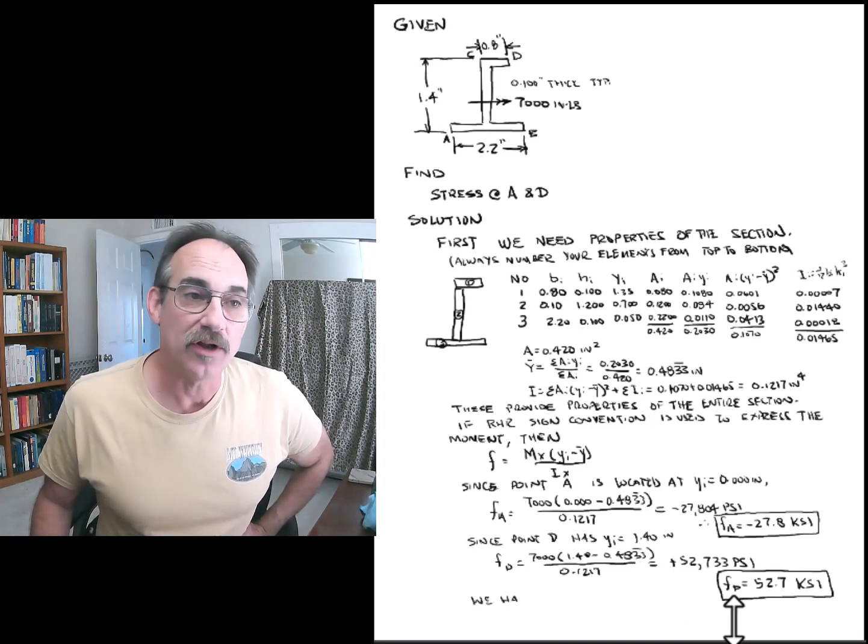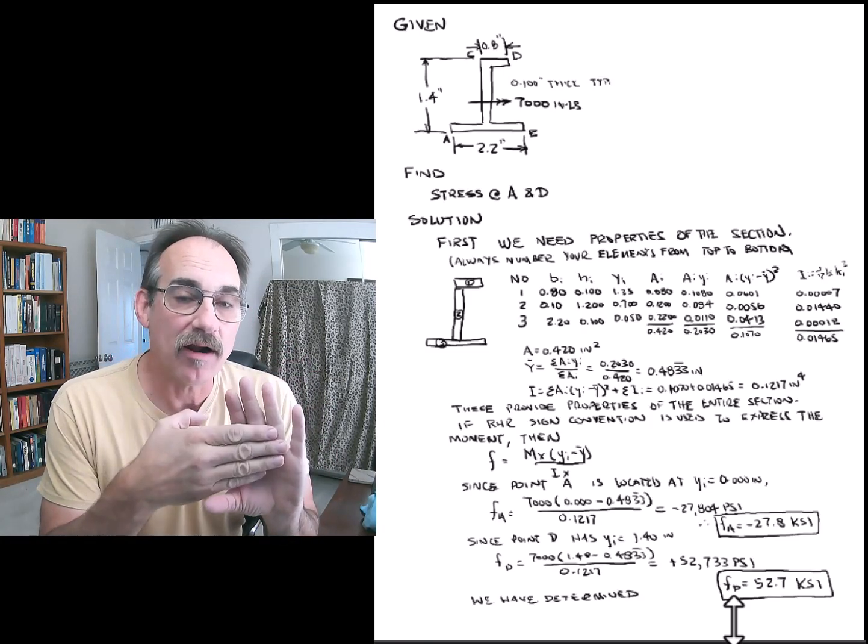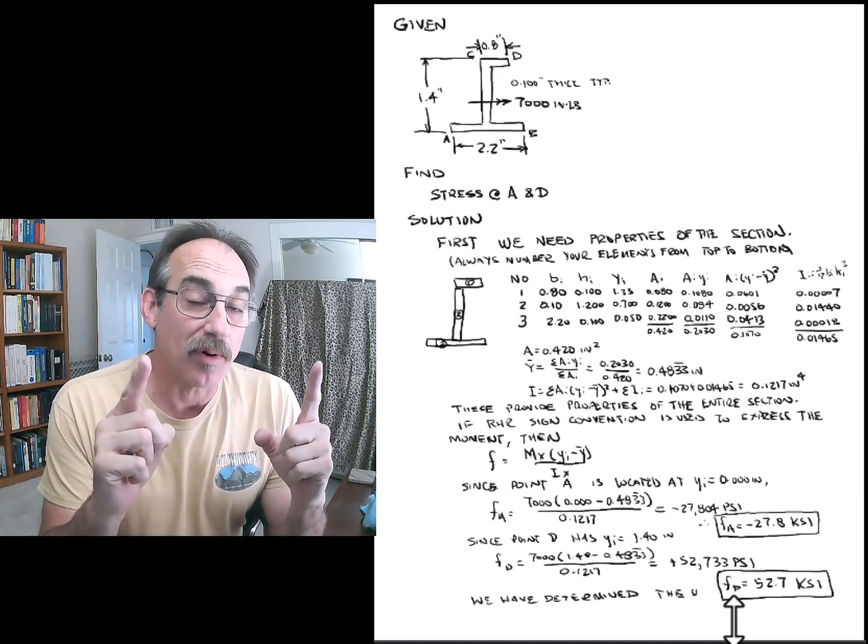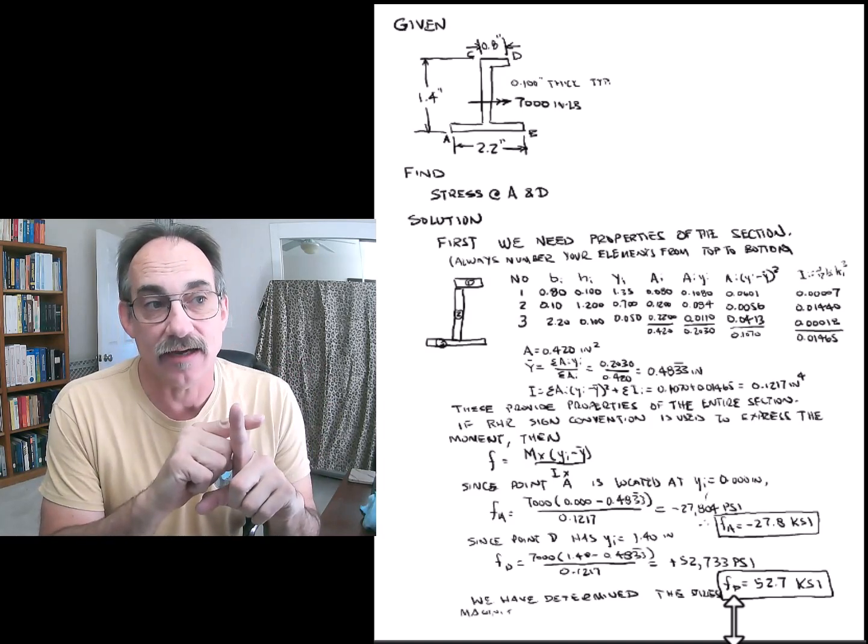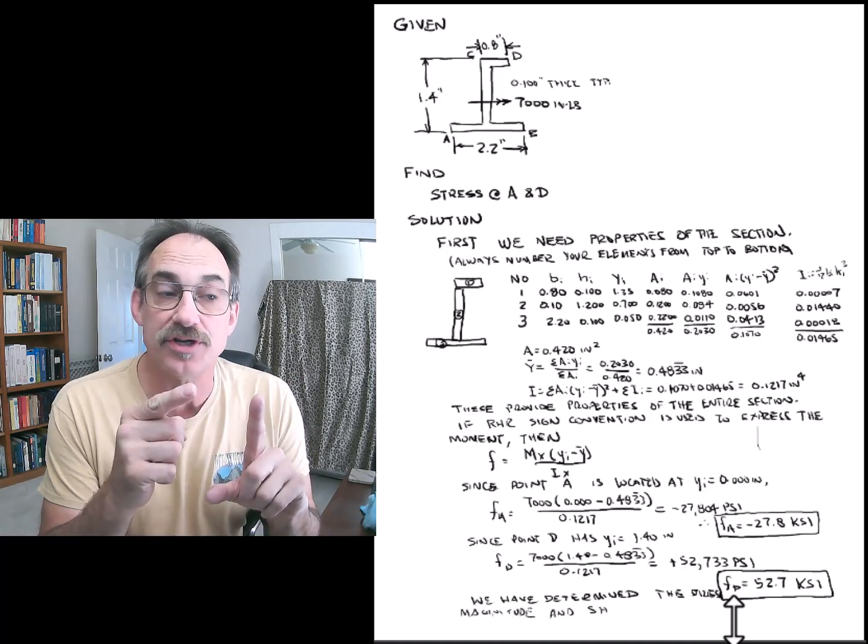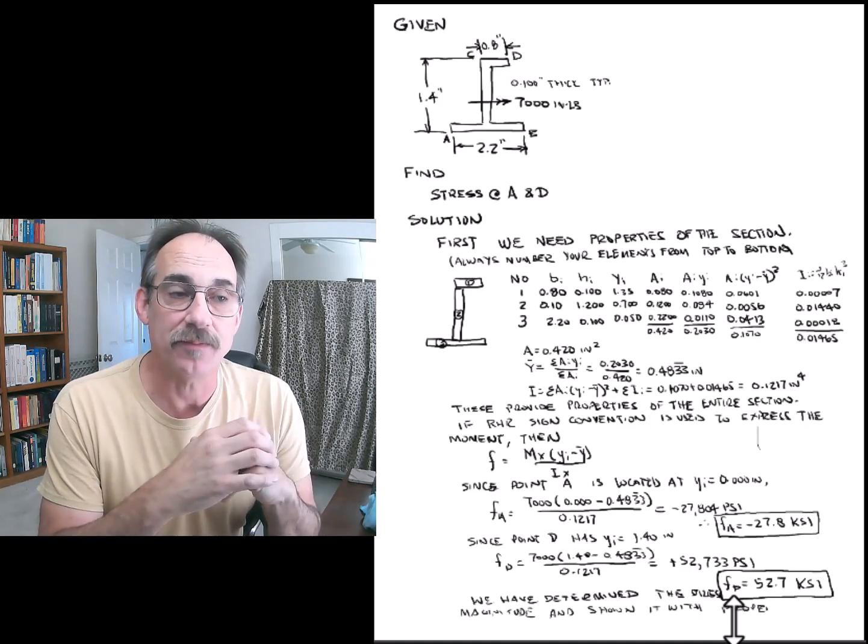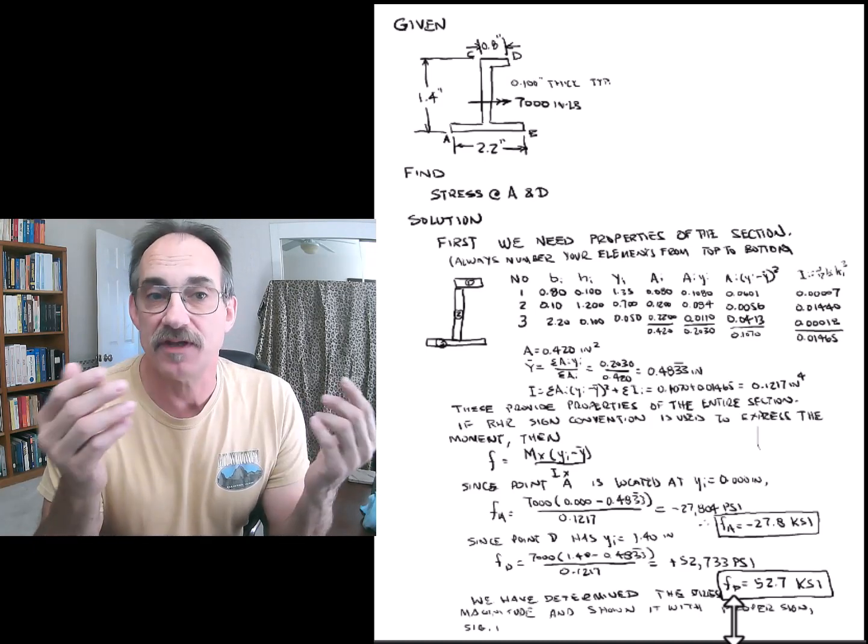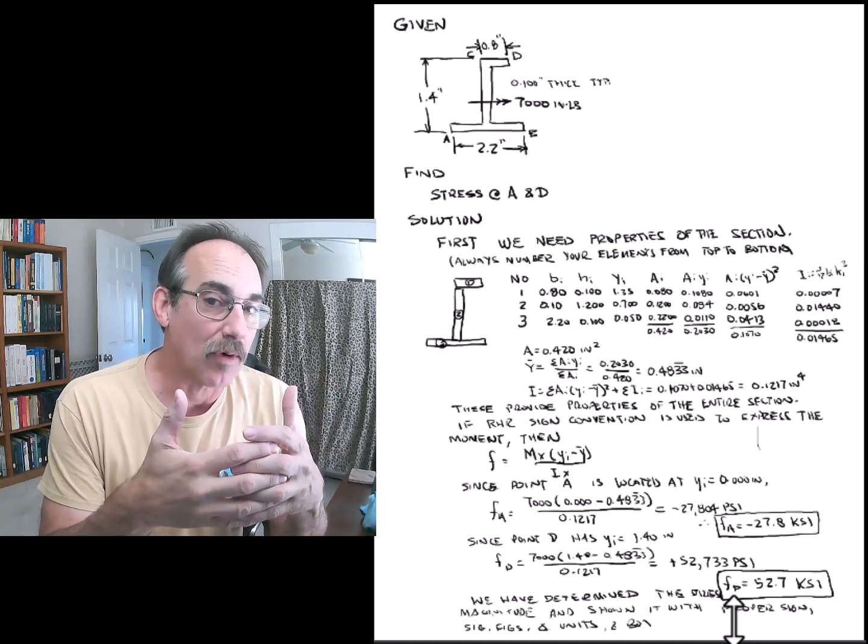When we're all done, we look at our answer. We have identified each answer with a numeric value, which is showing proper sig figs and units and sign. I'm showing this as sign is negative and positive. We could have also shown that instead as C or T for tension and compression. We box our answers if this is a student problem. So our answer stands out from the rest of our work.